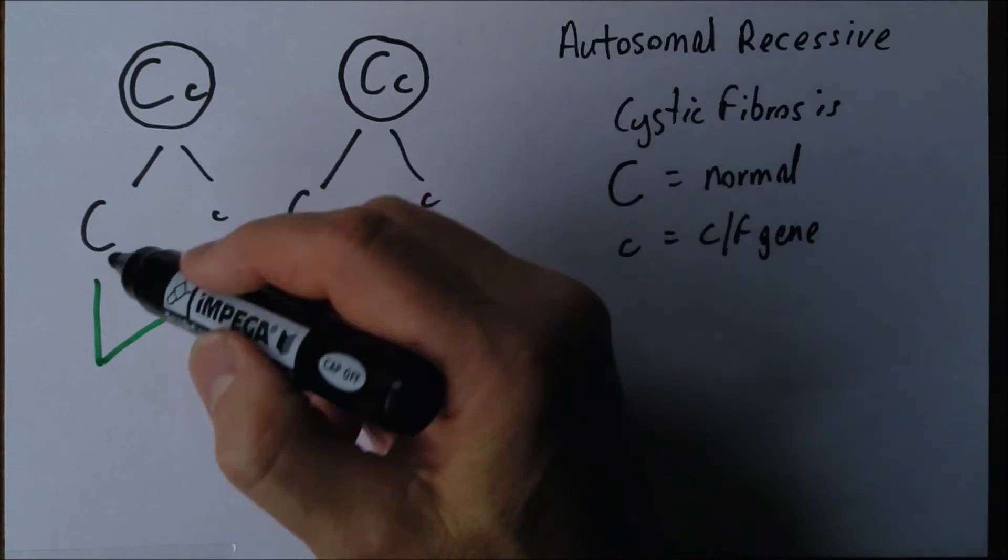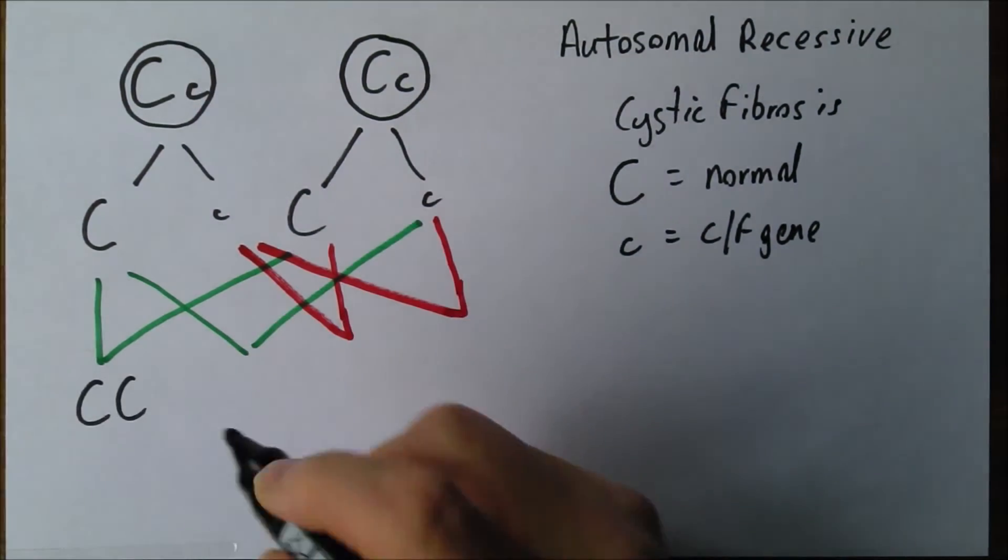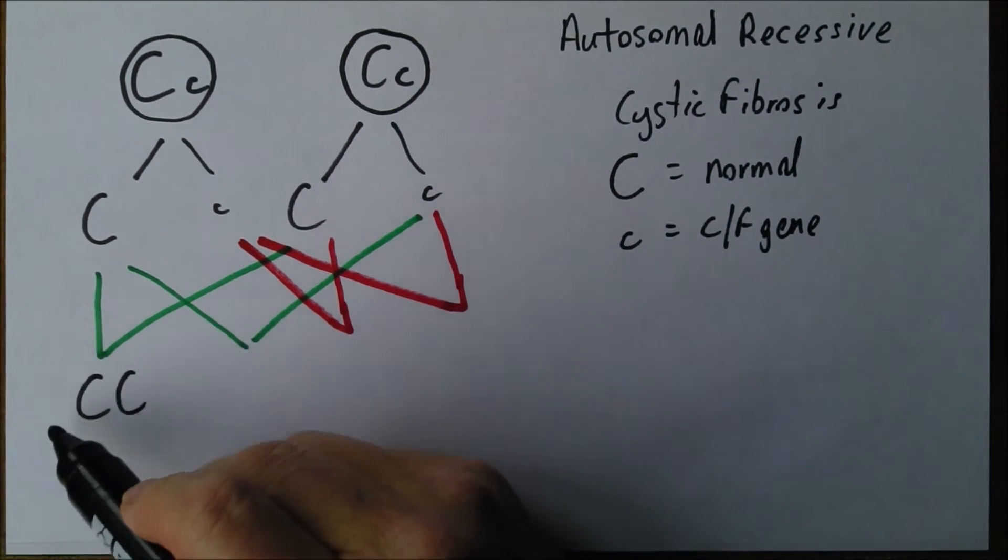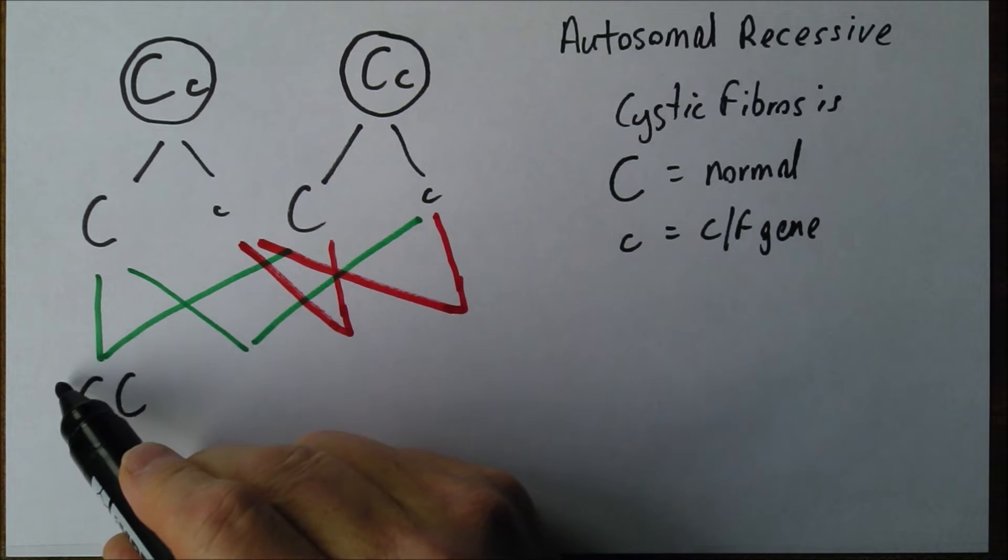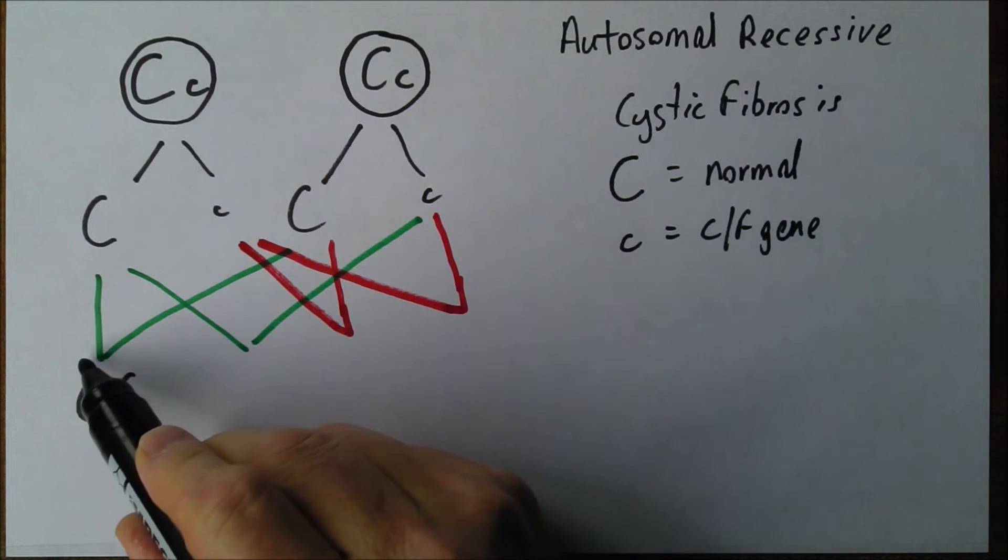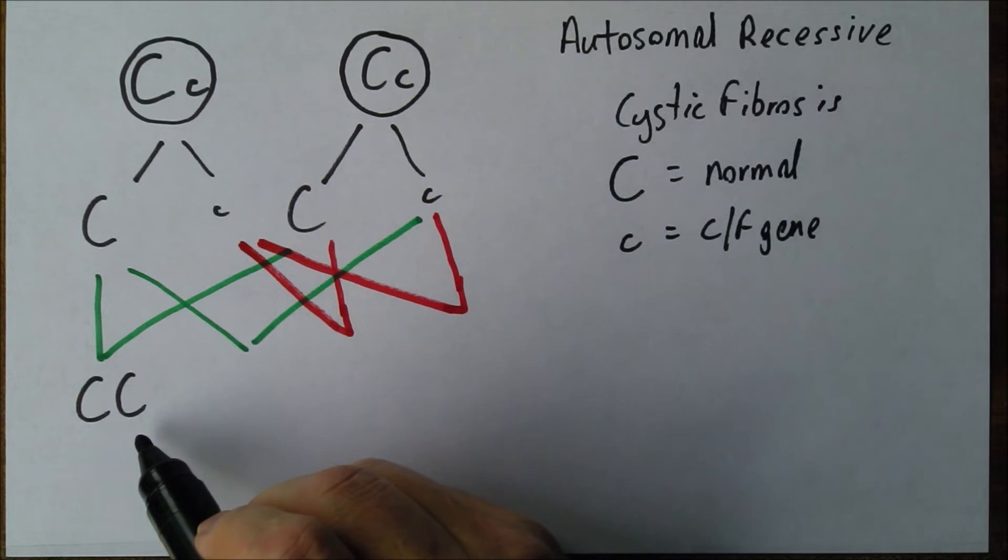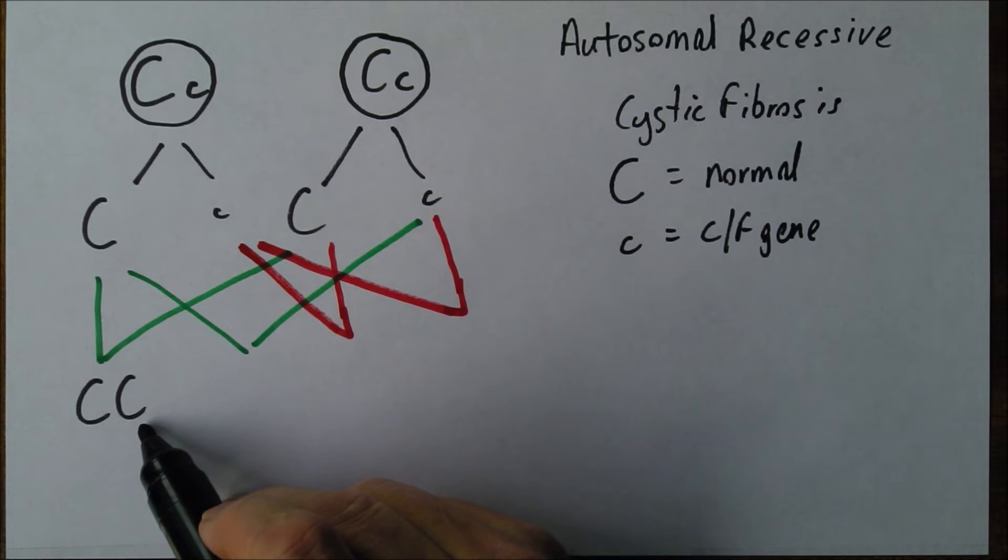In this case, we get two big Cs, meaning that person is phenotypically normal and doesn't suffer from cystic fibrosis. Genotypically they're homozygous for the normal gene. That's good because they can't carry the cystic fibrosis gene to the next generation.